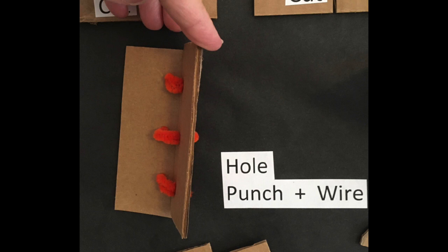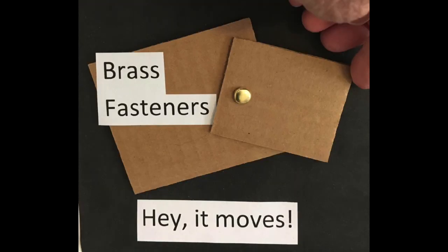Another way that you can do it is you can punch holes in it and run wire or pipe cleaner around, and that gives you a hinge.